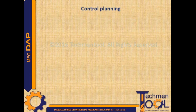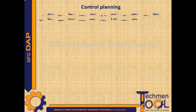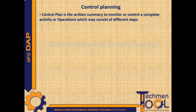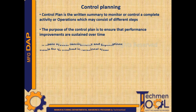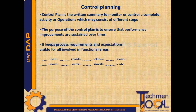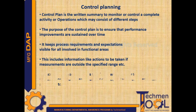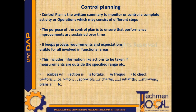Control Plan is one of the requirements of the AS standard. It is the written summary to monitor or control a complete activity or operations which may consist of different steps. The purpose of the control plan is to ensure that performance improvements are sustained over time. It keeps process requirements and expectations visible for all involved in functional areas. This includes information like actions to be taken if measurements are outside the specified range.